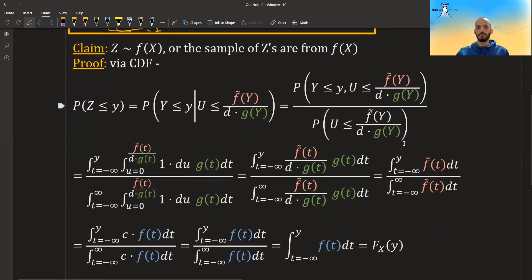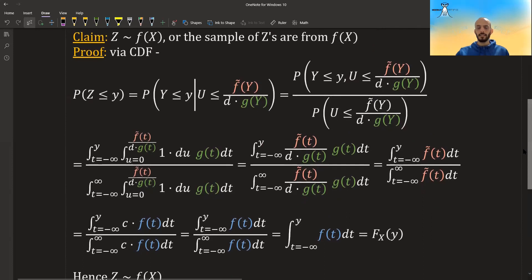So how are we going to prove it? We are going to prove it via the CDF. The CDF of any distribution completely defines the distribution. So if you have a CDF of a certain distribution that looks like the CDF of, let's say, a normal distribution, then your distribution is normal. So we are going to look at this random variable z and we are looking at the CDF of z at the point y. So this is basically the probability that our random variable z is less or equal to y.